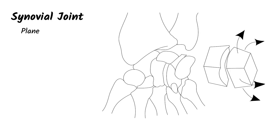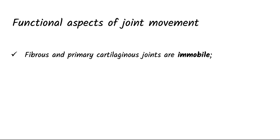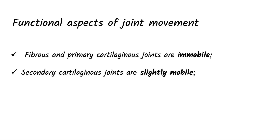Plain synovial joints occur between carpal bones, allowing only gliding movement. To summarize functionally: fibrous and primary cartilaginous joints are immobile; secondary cartilaginous joints are slightly mobile; and synovial joints are freely mobile.